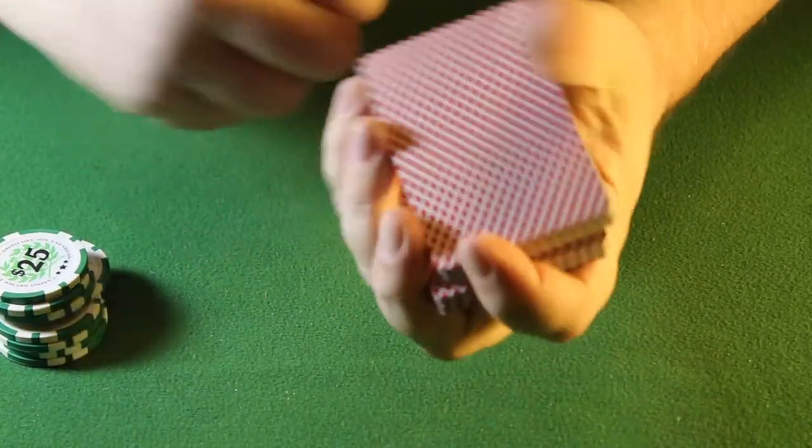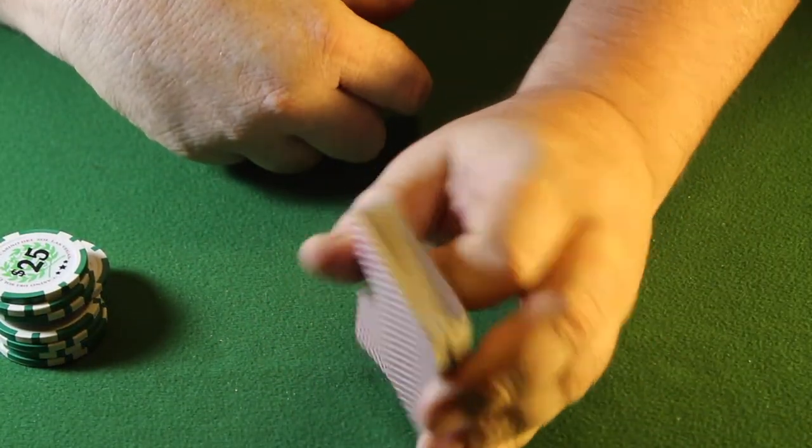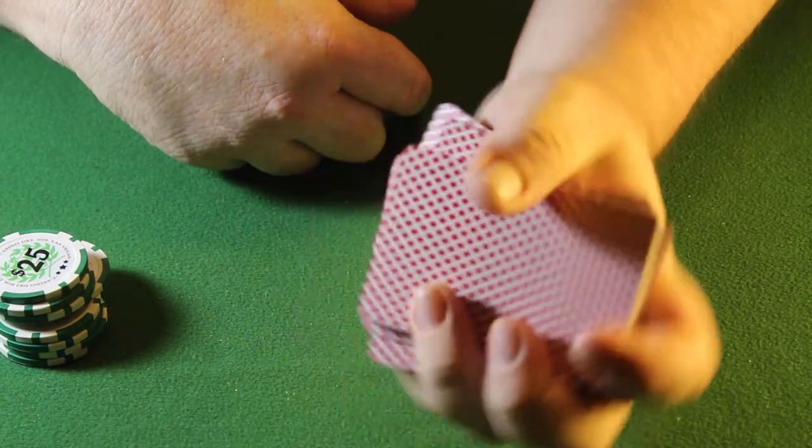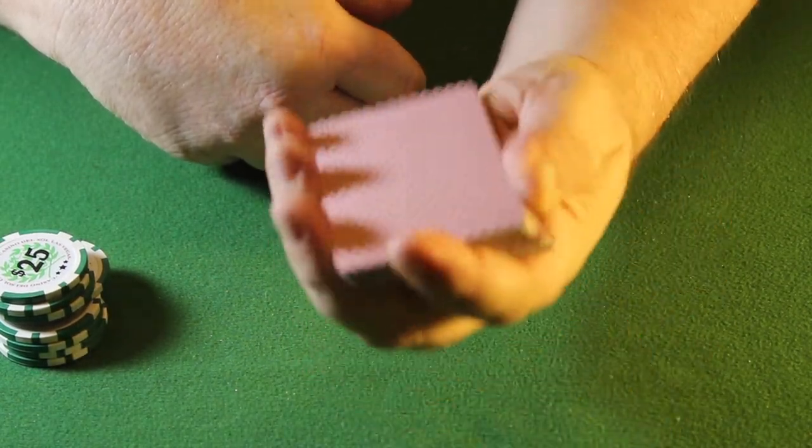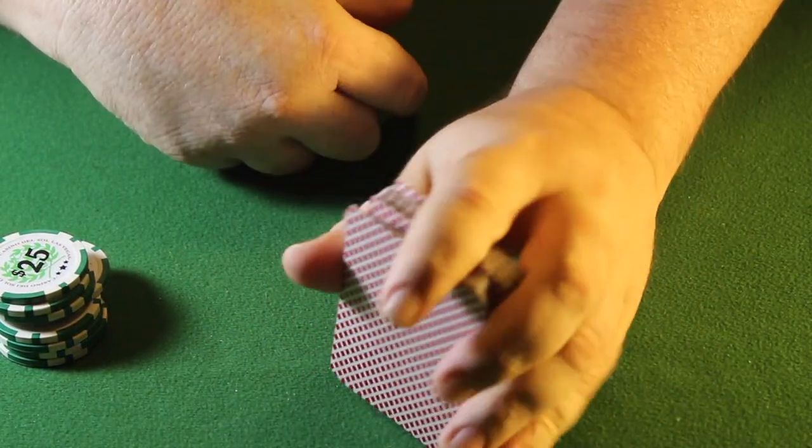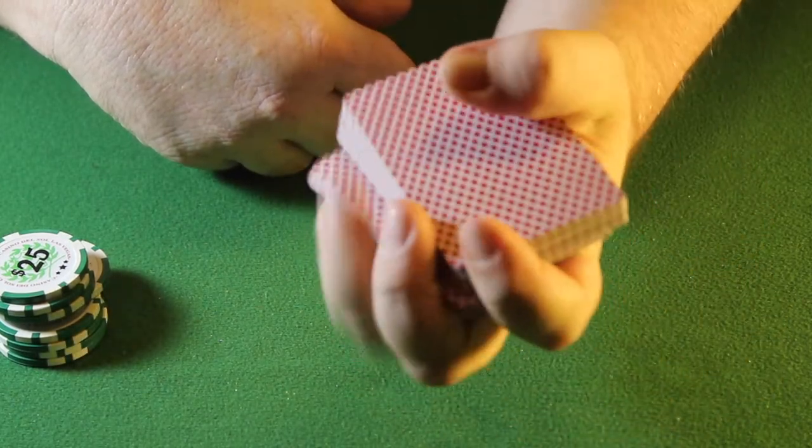Here's a quick pro tip for you: the deeper you get that pinky finger underneath the bottom of the deck, the more control and the more speed you'll have when doing the shift.